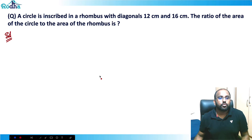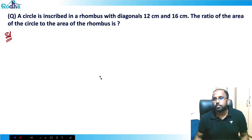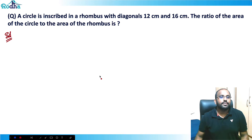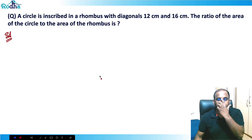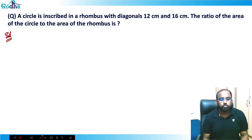Let's look at this question from CAT 2020 Slot 1. It says that a circle is inscribed in a rhombus with diagonals 12 centimeters and 16 centimeters.